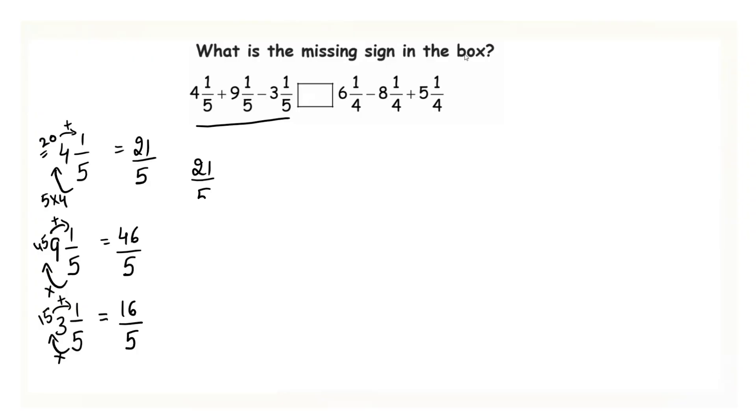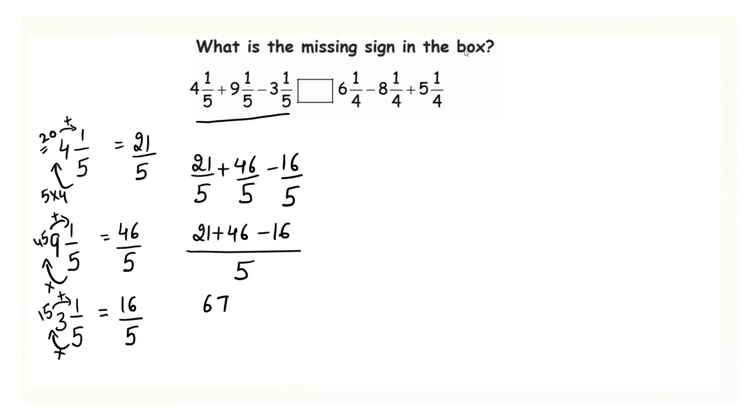So we'll write here 21 over 5 plus 46 over 5 minus 16 over 5. So all the fractions have the same denominator. We write down 5 here, 21 plus 46 minus 16. So we have to write down the fractions which have a positive sign together and the one which is having a negative sign has to be written at the end. So when you will solve it you will get it equals to 67 minus 16 over 5 which is equals to 51 over 5.